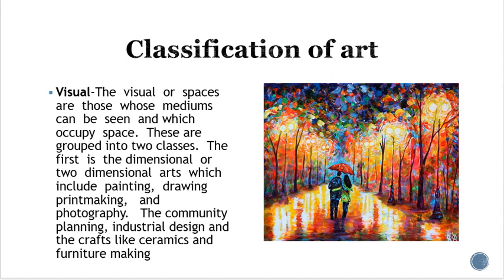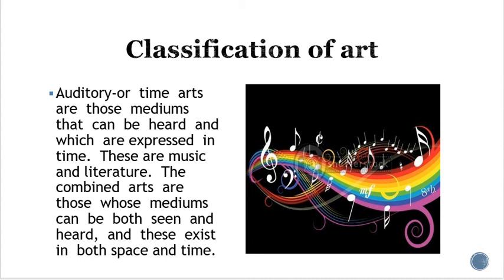What are the different classifications of art? The first classification is visual art, or space art — those whose mediums can be seen and which occupy space. These are grouped into two classes: two-dimensional art, which includes paintings, drawings, printmaking, and photography; and three-dimensional art, which includes community planning, industrial design, and crafts like ceramics and furniture making. The second classification is auditory or time arts — mediums expressed in time, such as music and literature. The combined arts are those whose mediums can be both seen and heard, existing in both space and time.